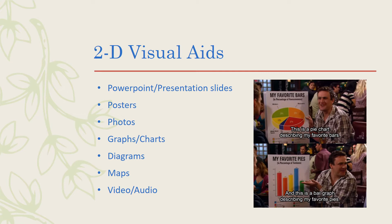Examples of the most common types of 2D visual aids are PowerPoint or presentation slides. Every once in a while I get a student who would prefer to use another platform that is not PowerPoint to display a visual aid, which I am okay with. Also posters, photos — actual photos of an event or something that happened, maybe ones that you took, or maybe you find some photos that would showcase your topic well.